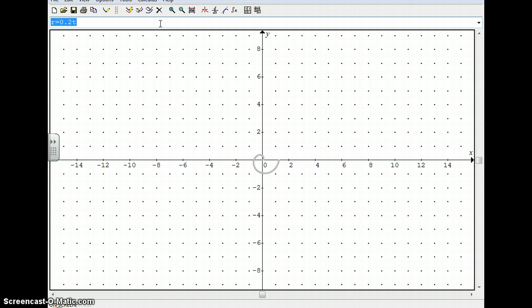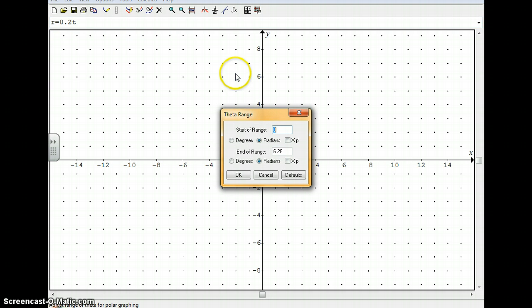Right now, my domain is set at 0 to 2 pi. That's the default domain for all these polar functions. But if you go up here to options and take a look at that, we get something pretty interesting here called theta range. Click that and you get this little dialog here. Start of range, end of range. So that's your domain for your function.